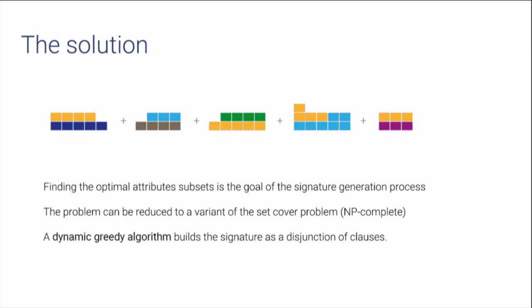If you think about it, it's a problem very similar to the well-known set coverage problem. Actually, this is a variant of the set coverage problem, which is unfortunately very hard to solve because it's NP-complete. But since we are not interested in a global optimal solution — just a local optimal solution — I have developed a dynamic programming algorithm to solve the problem and automatically generate a signature.